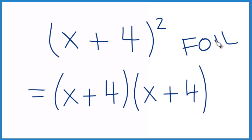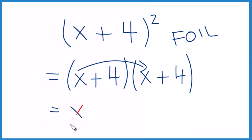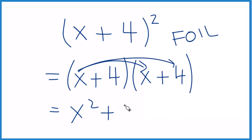This is a nice way to remember. We take the First term — that's x times x — which gives us x squared. Then we take the Outside terms, this and this here, so x times 4, that gives us 4x.